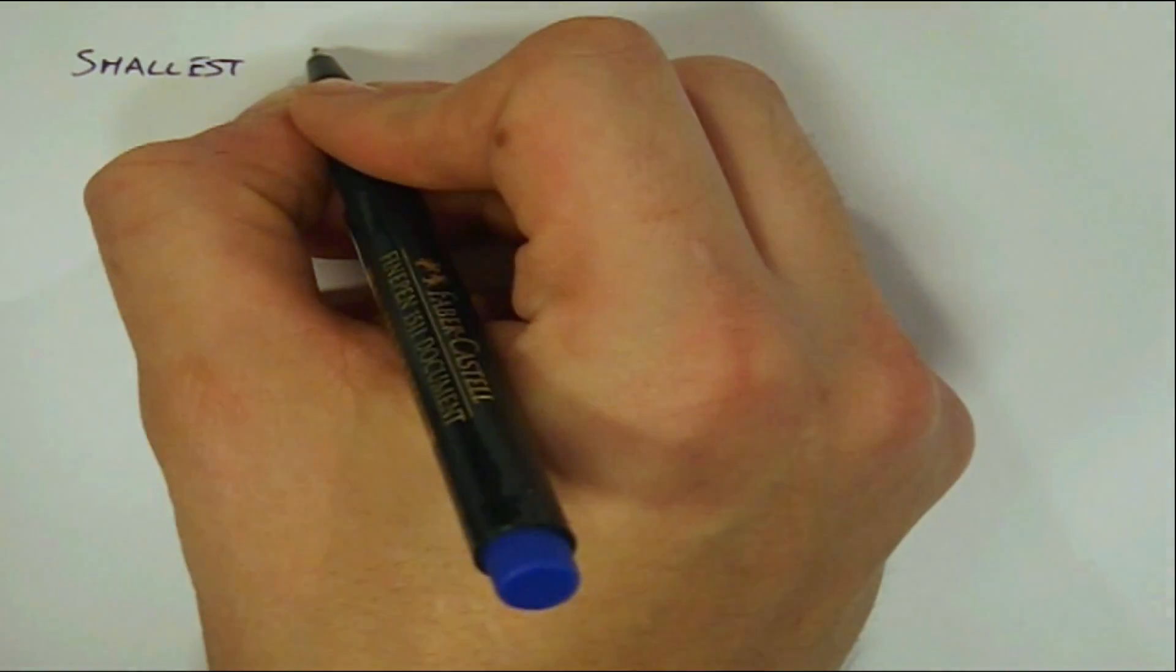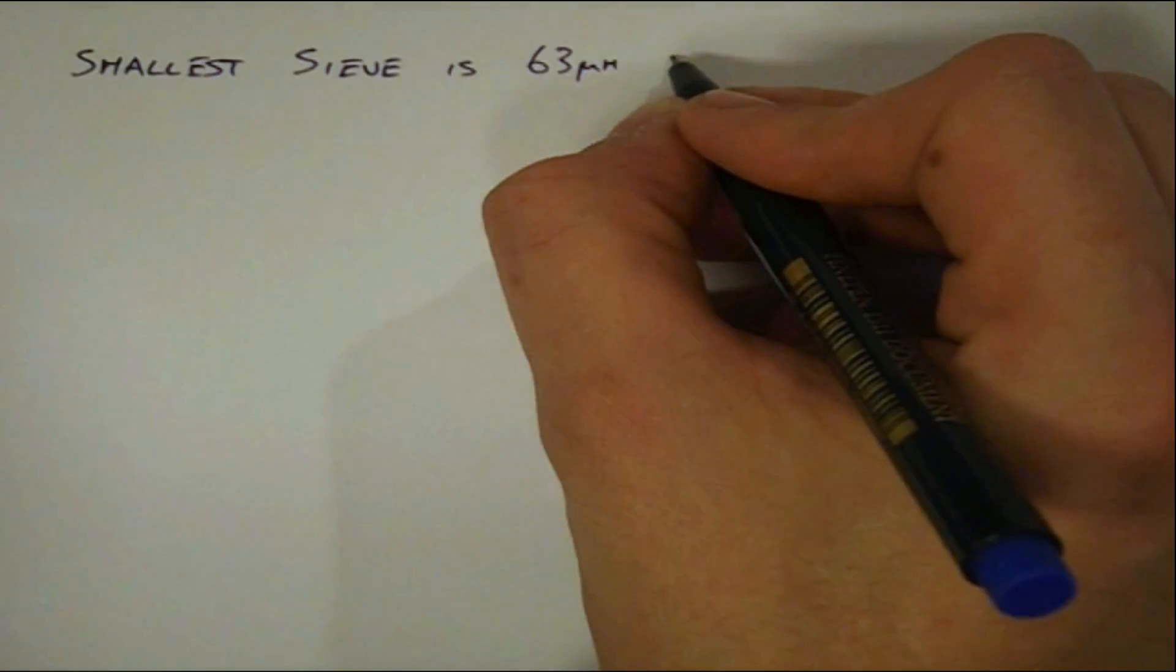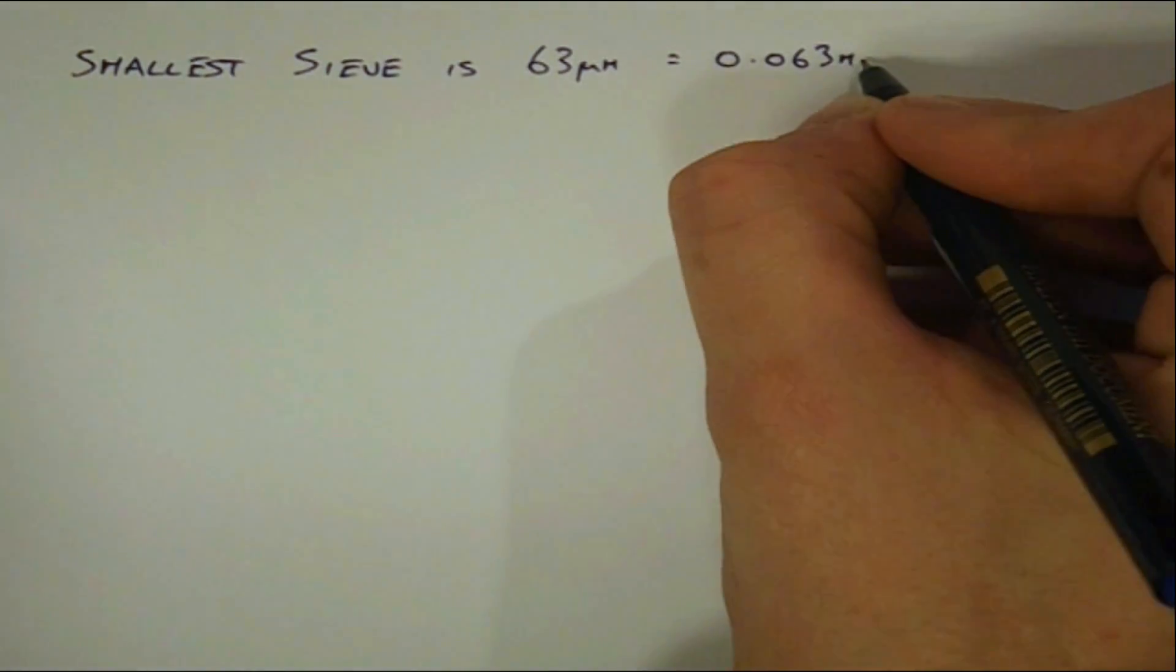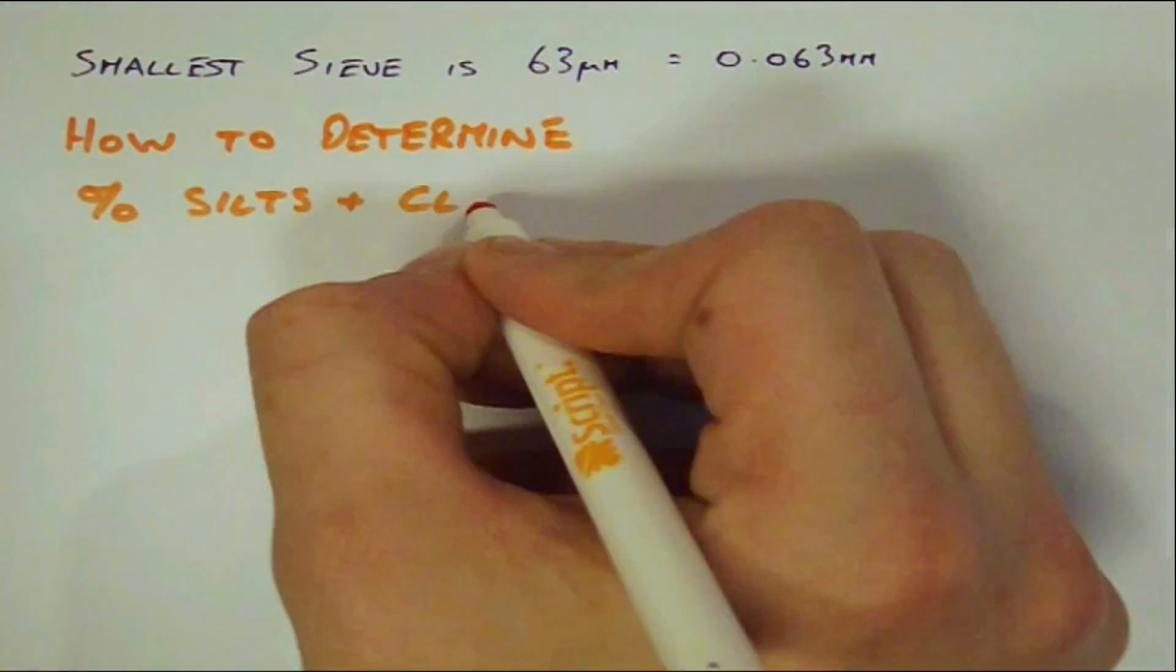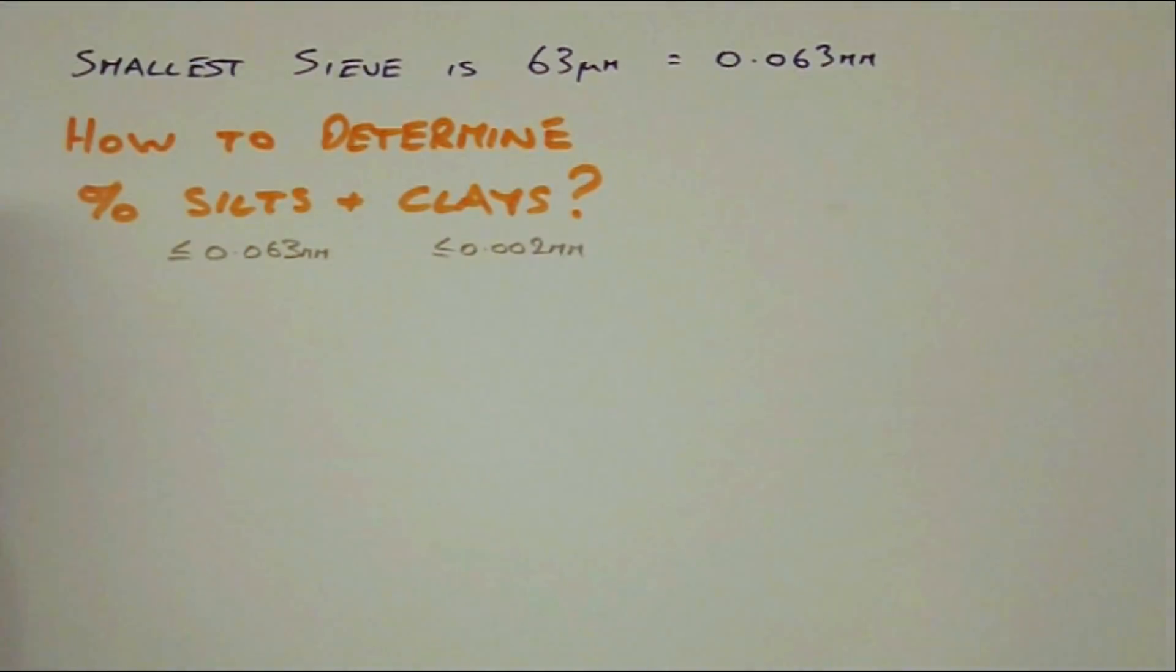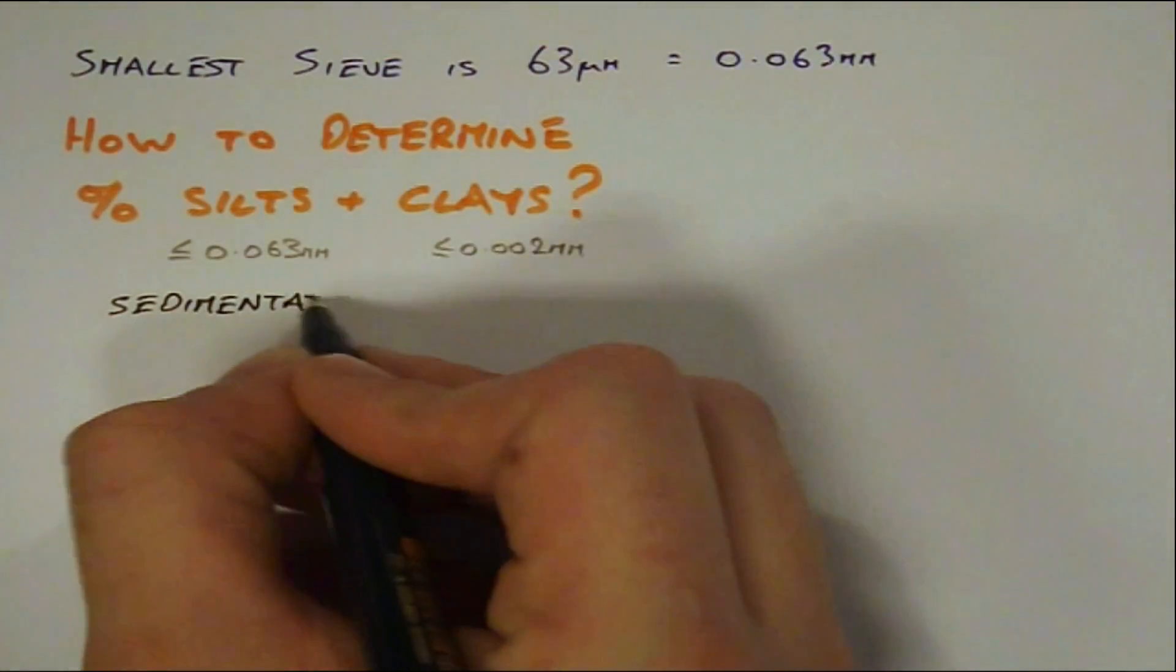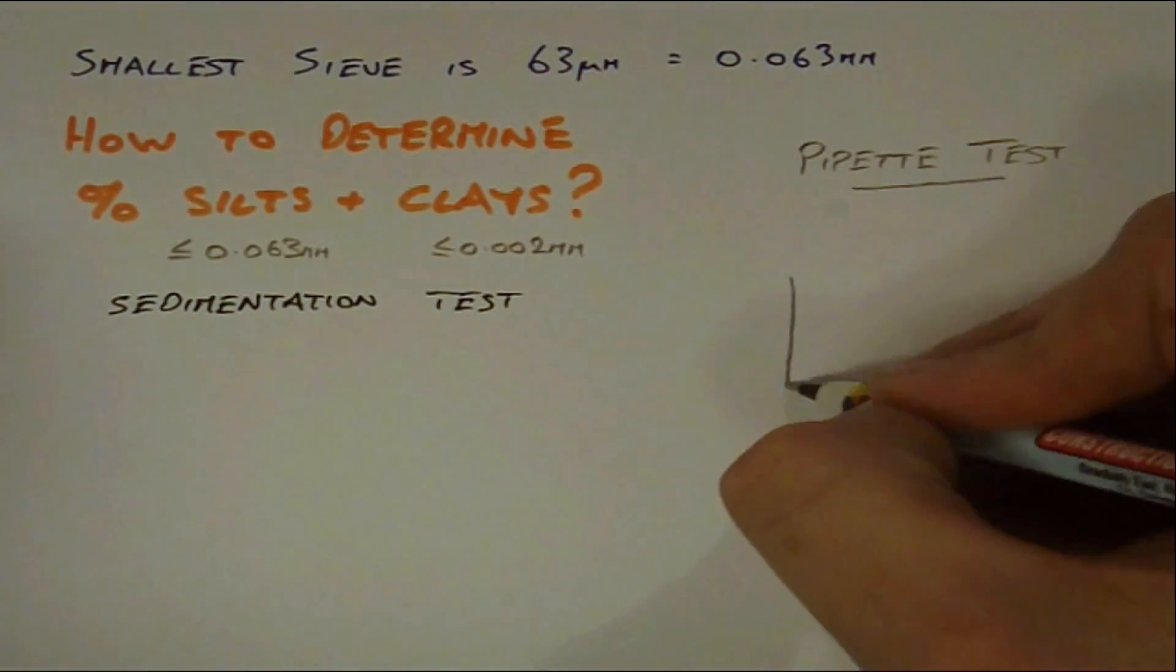If you were looking carefully, you may have noticed that the smallest sieve size has an opening of 63 microns or 0.063 millimeters. How then do we determine the tail end of the grading curve for the silt and clay sized particles? Well, this is accomplished by undertaking a sedimentation test using the pipette or hydrometer methods.